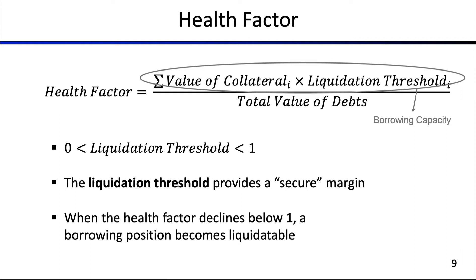When the health factor of a borrowing position declines below one, that position becomes liquidatable. This is the point in time where a liquidator can liquidate your position — anyone can do this — this is the point where entities are able to call the smart contract to liquidate your position.